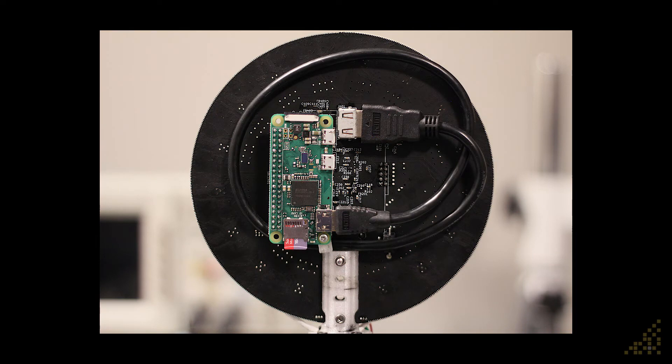And here's the back side of the board. You can see the Raspberry Pi Zero and the HDMI cable. This is the shortest one I could find.